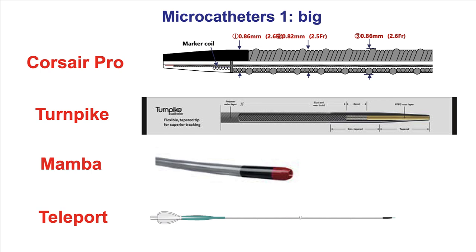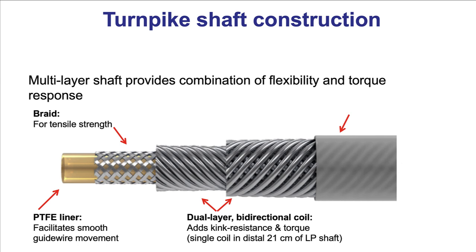The first category — the larger outer diameter microcatheters. Classic examples are the Corsair Pro and the Turnpike. Newer microcatheters include the Mamba and the Teleport. These microcatheters have a larger outer diameter and a coil construction; as a result, they can be spun. The microcatheters are not a simple piece of plastic but are actually a rather sophisticated piece of equipment with a lot of engineering.